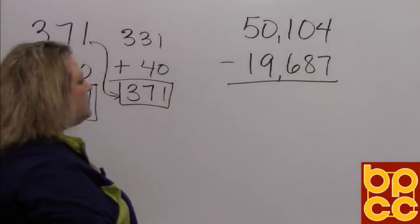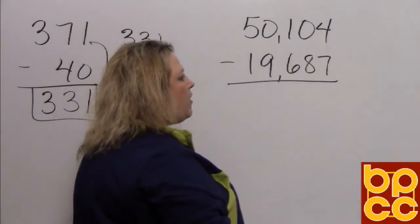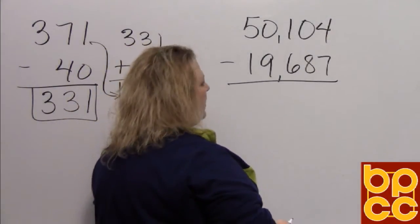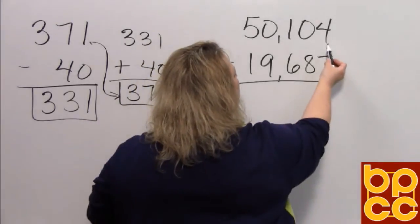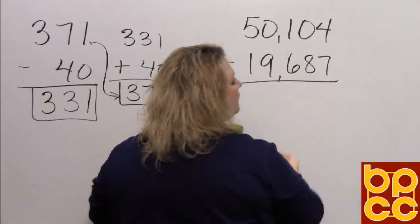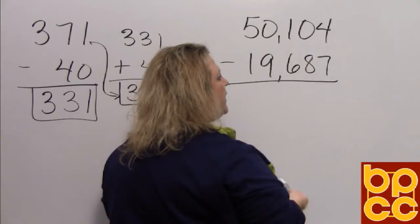Now let's do one that's a little more challenging because it requires us to borrow or regroup as they call it now. You cannot take 7 away from 4. So what do we have to do? We have to go and borrow.